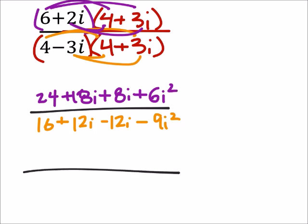Now let's combine some like terms and change those i squareds to negative 1. So I've got, in the numerator, I've got 24 plus 18i plus 8i would be 26i. And then I would be adding a 6, but that i squared is going to become a negative 1.